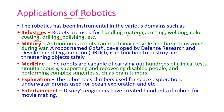In the military, autonomous robots can reach inaccessible and hazardous zones during war. In medicine, robots are capable of carrying out hundreds of clinical tests simultaneously. They are also used for supporting and assisting disabled people and performing complex surgeries such as brain tumor and heart surgery.